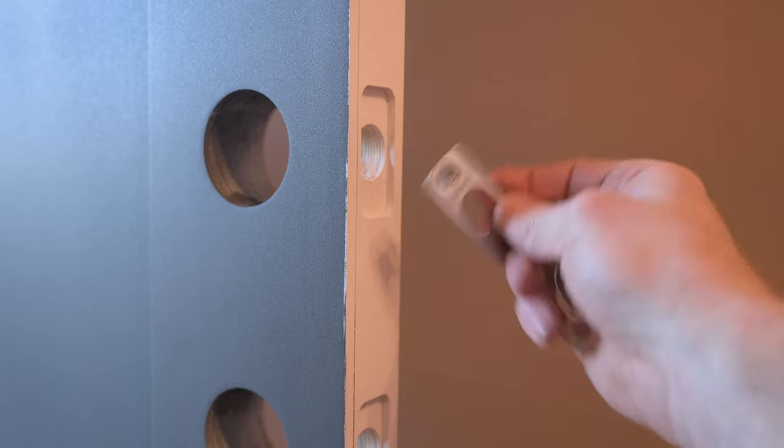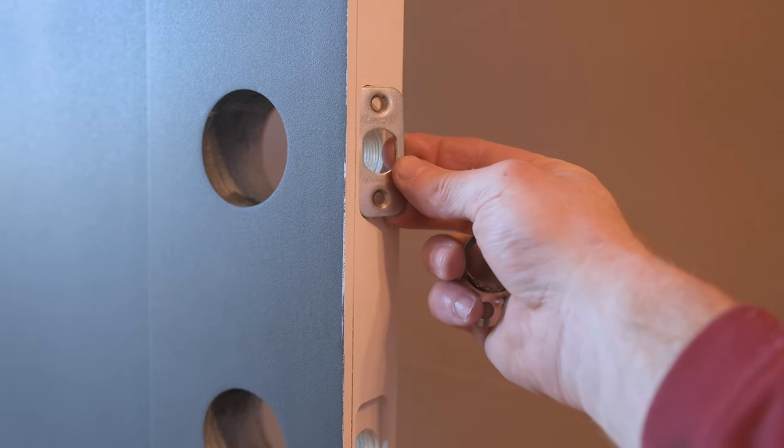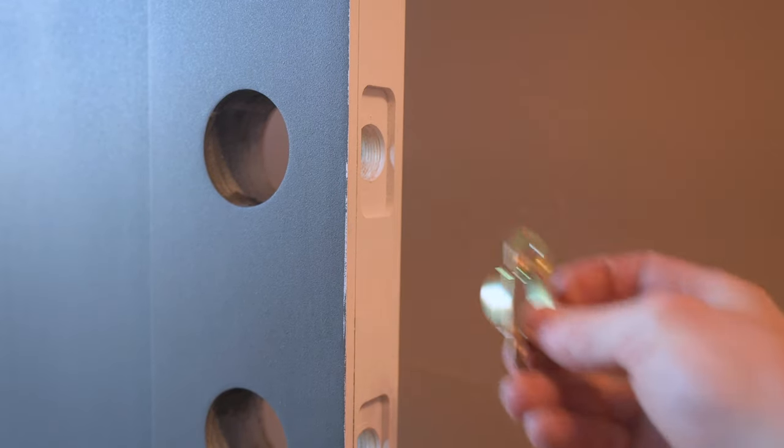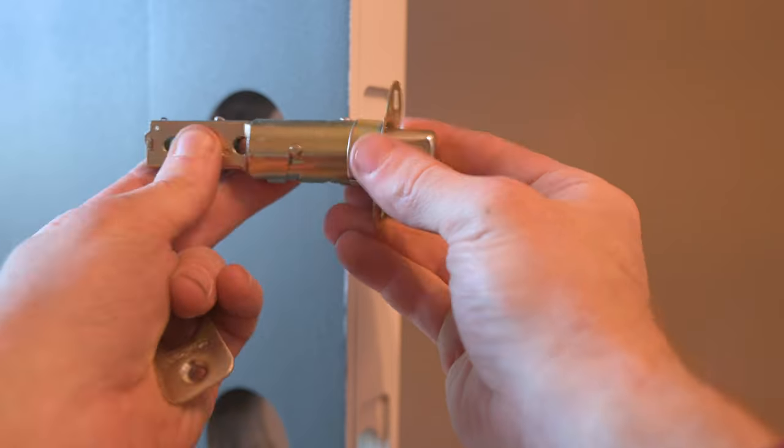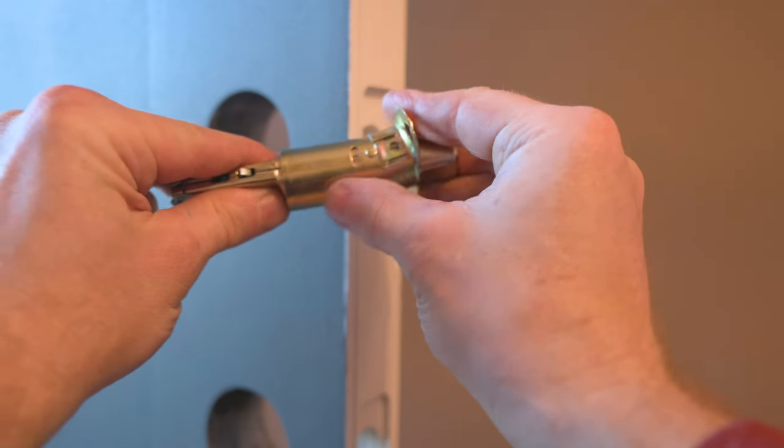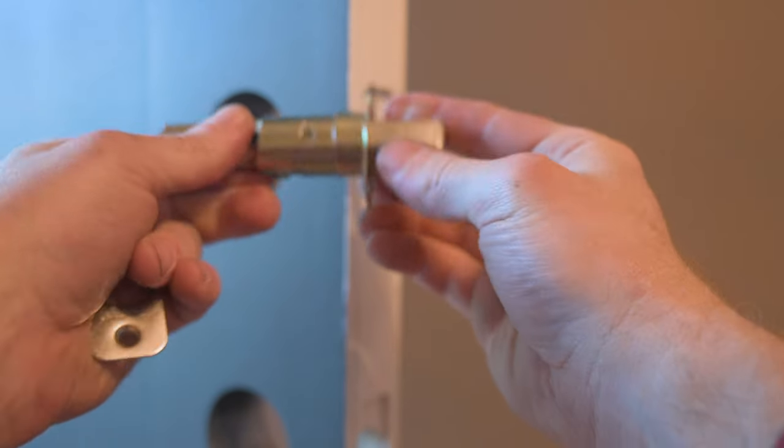Because this door has a rectangular recess to hold the faceplate, we now need to install this backplate onto the latch bolt. And it just slides over the bolt and clicks into place over this little circular nub.